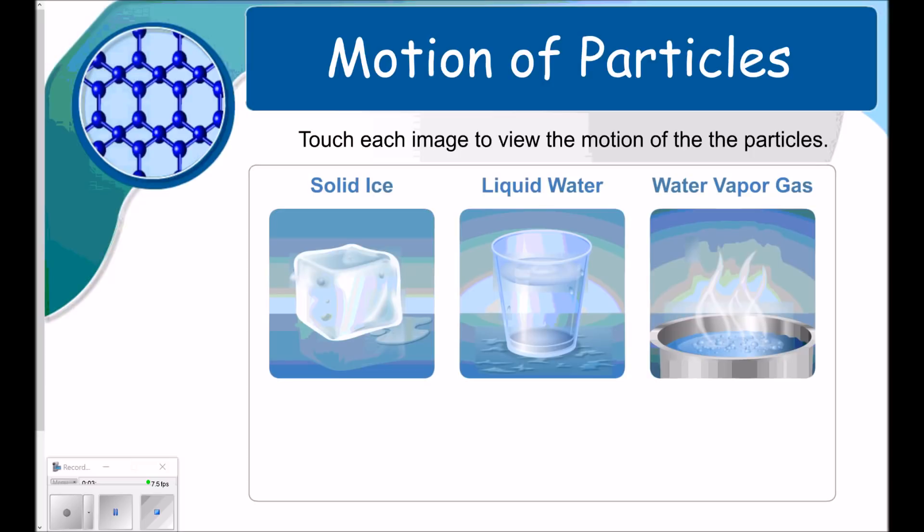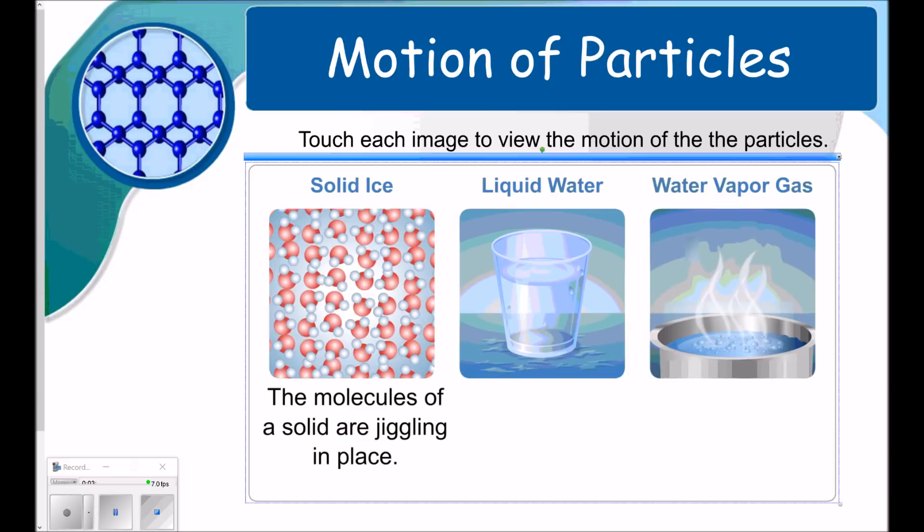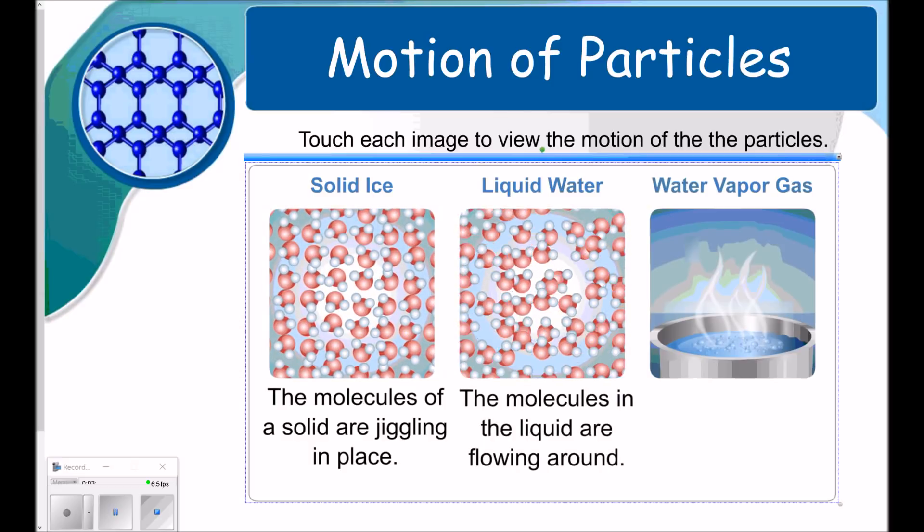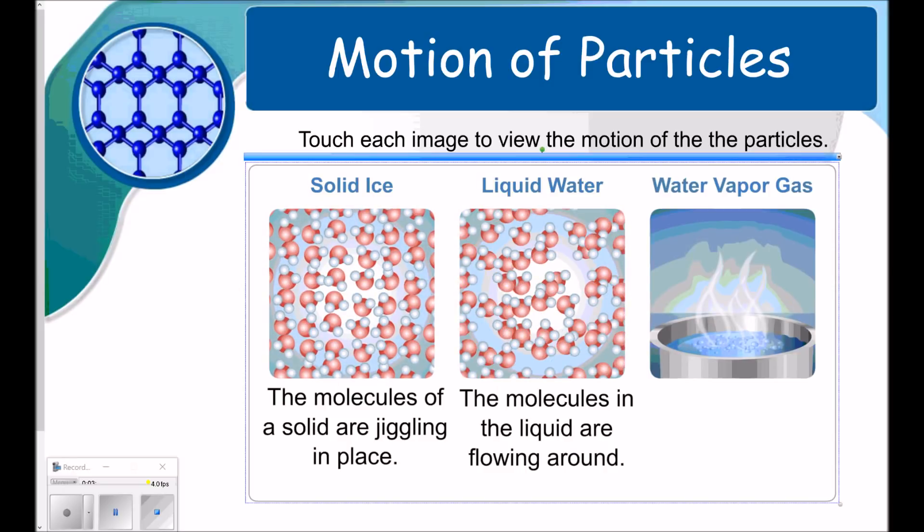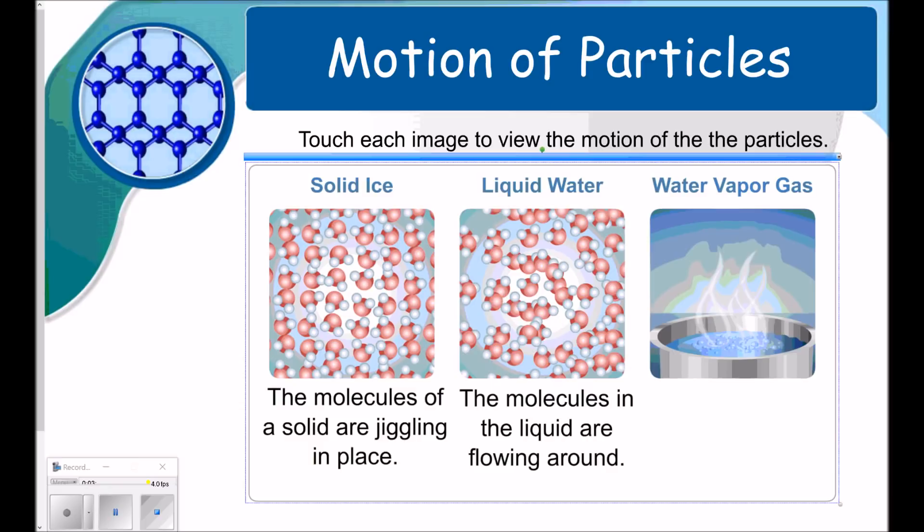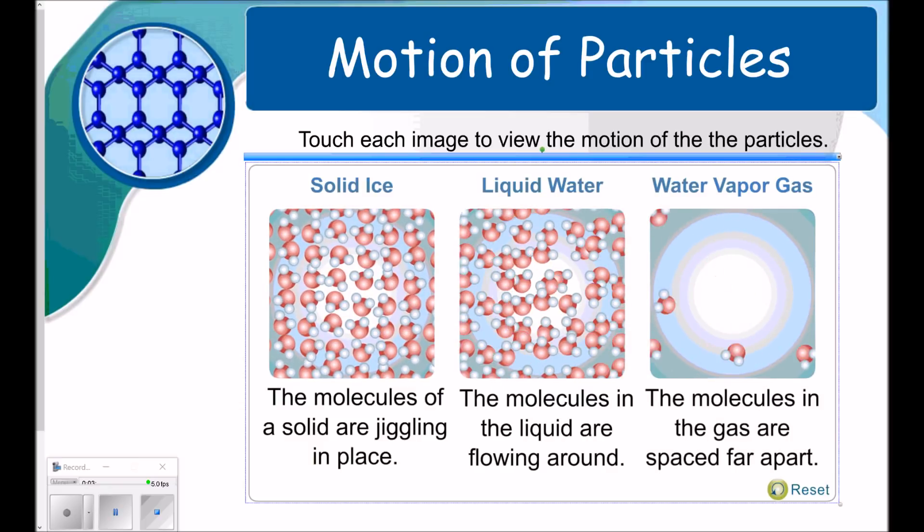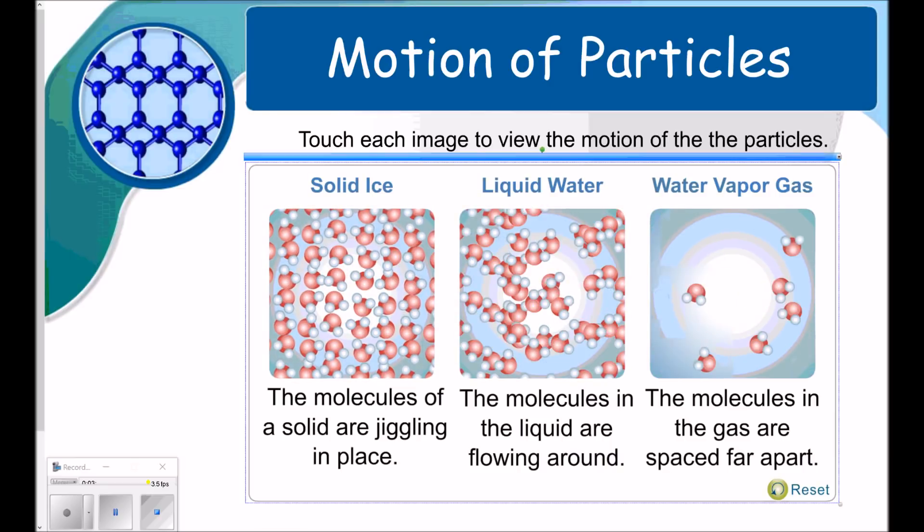Here's a good depiction of what the motion of the particles of each type of matter look like. So, solids. In this example, it's ice. The motion of the particles are jiggling in place or vibrating next to each other. Liquid water, if we zoom in, we see that the molecules in the liquid are flowing around. They have a medium kind of movement. And then lastly, water vapor, being a gas. We can see that the molecules in the gas are spaced far apart. They're random and they're fast moving.